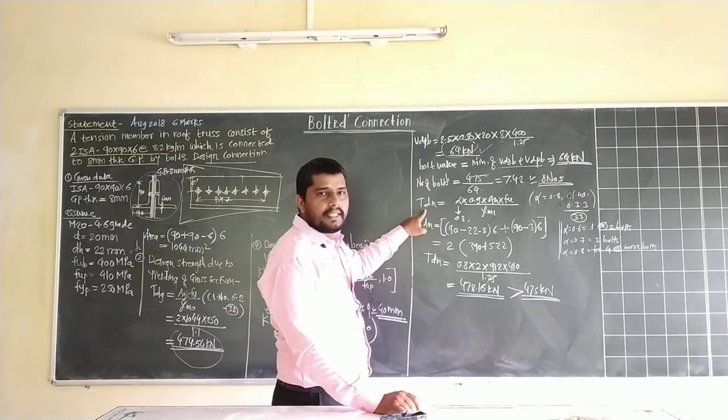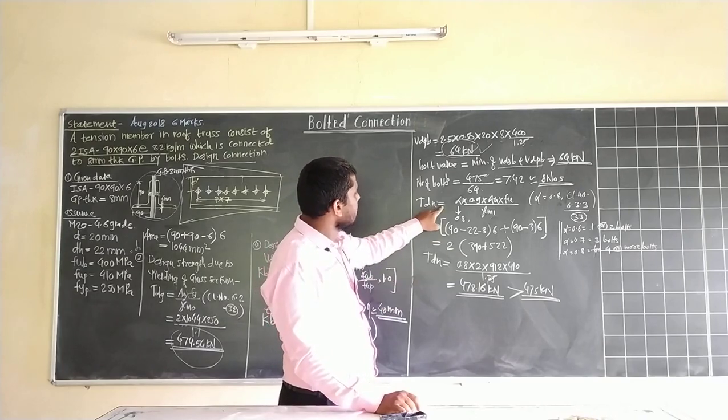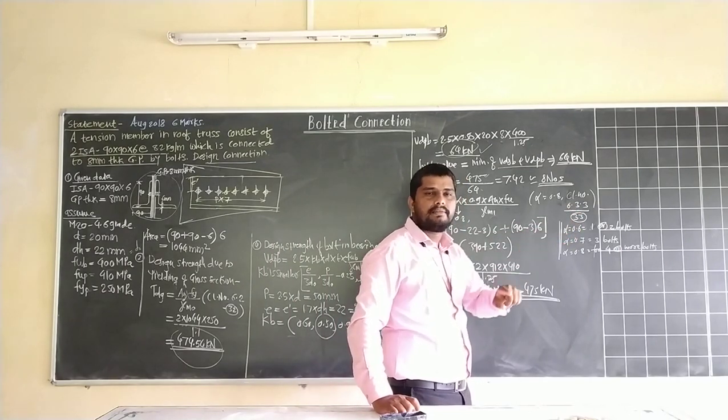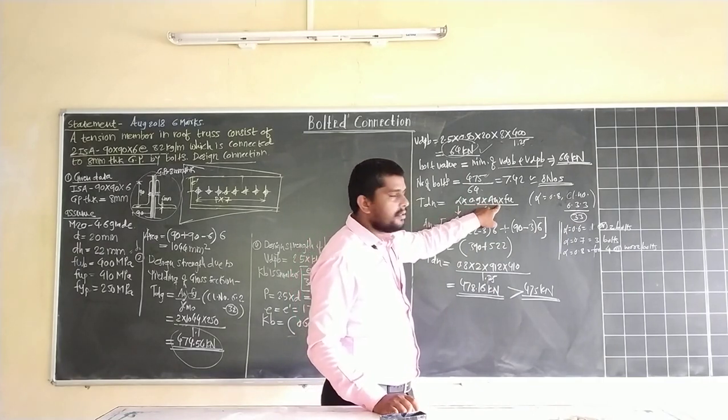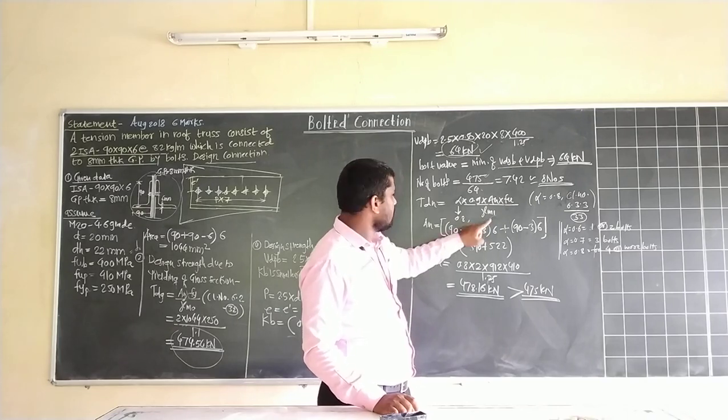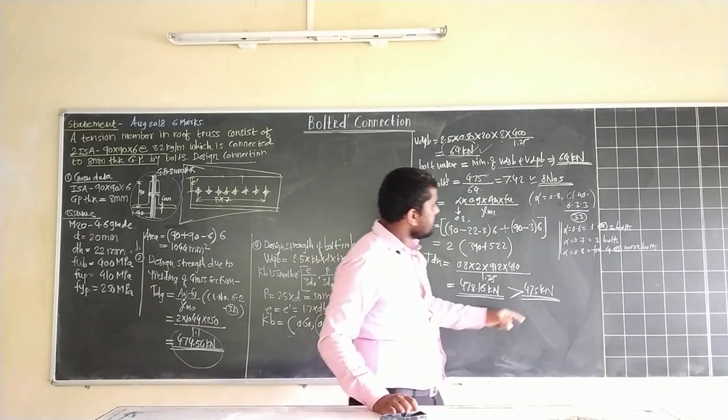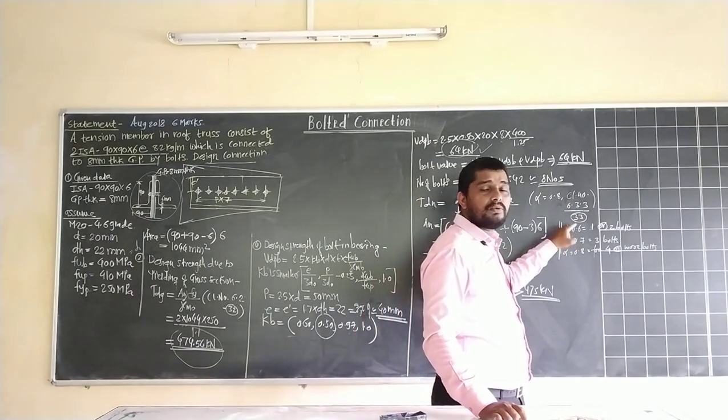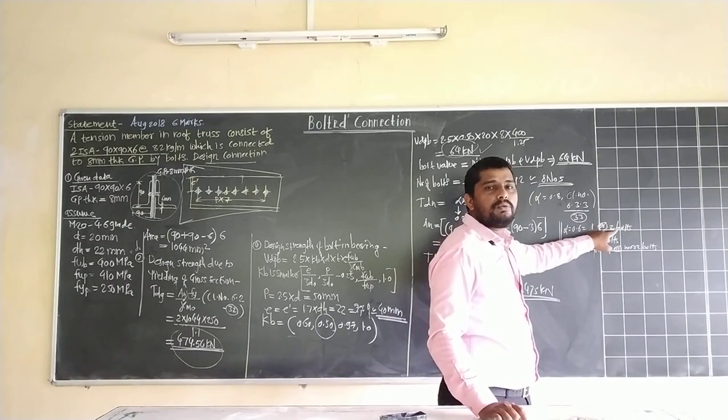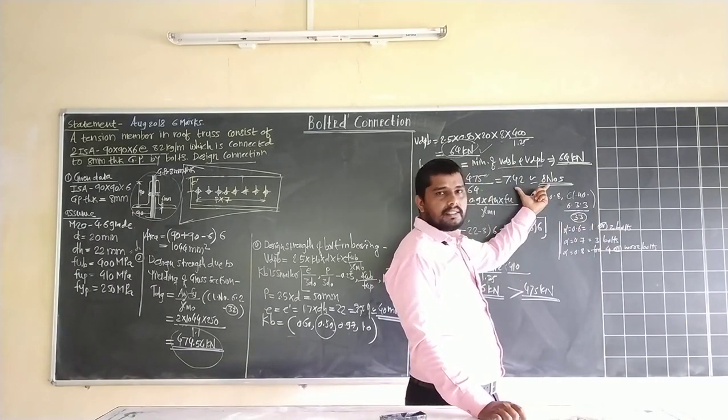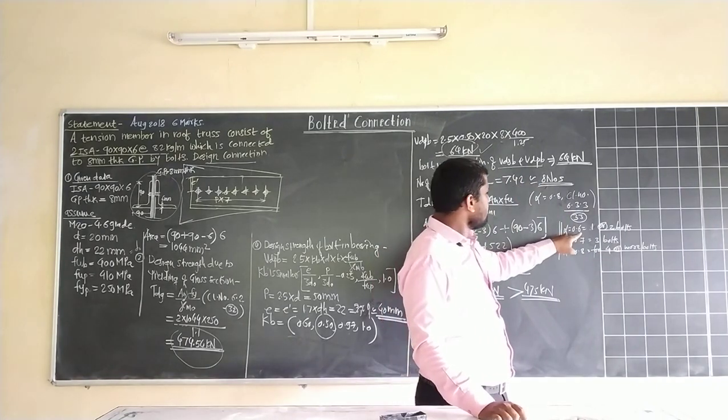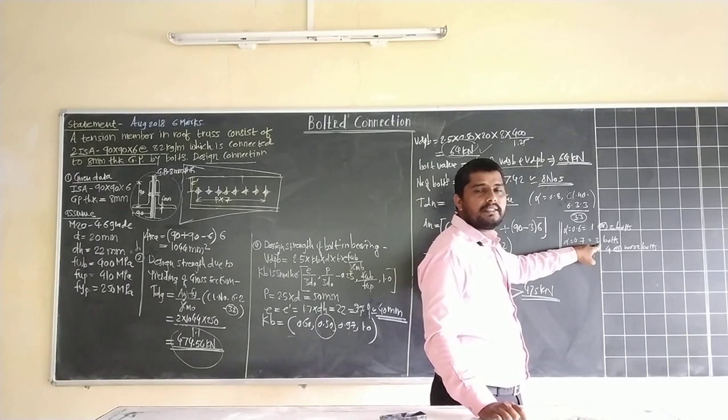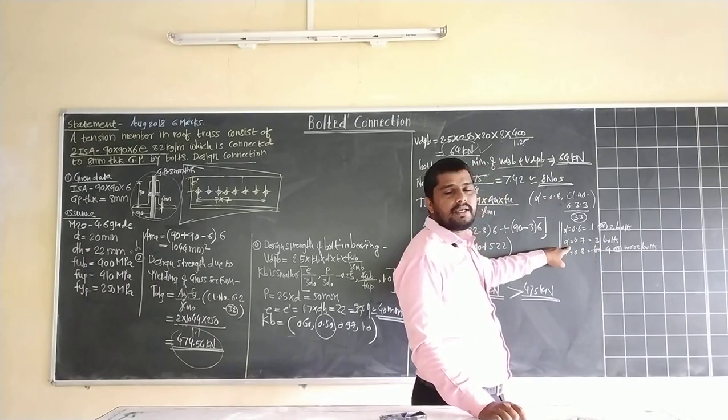Next step: determine T_DL. As per clause 6.3.3, page 33, IS 800-2007: alpha into 0.9 into A_N into F_Y divided by gamma_M1. How do we choose alpha value? As per clause 6.3.3, page 33: alpha is 0.6 if 1 or 2 bolts are provided. If we have 3 bolts, alpha equals 0.7.